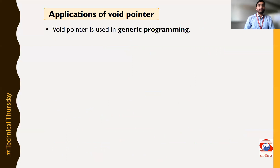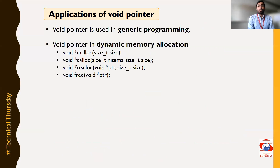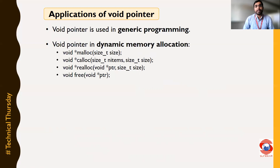This void pointer is used in generic programming. In C programming, we use this void pointer in dynamic memory allocation. When you are allocating memory dynamically, you are using this void pointer. All three functions using which we can allocate memory dynamically return the void pointer, because when we are allocating memory dynamically, we even don't know which type of data we are going to store inside that memory. That's why it returns a void pointer. Same for the free function — the free function needs only the starting address, and it doesn't care which type of data is stored inside it. So whatever memory you want to free, you can pass the starting address of that memory to the free function as a void pointer.